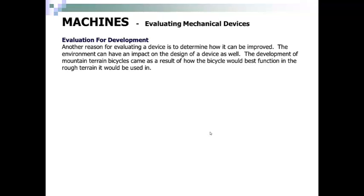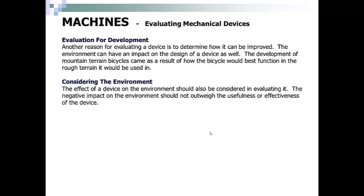Evaluation for development: another reason for evaluating a device is to determine how it can be improved. The environment can have an impact on the design of a device as well. The development of a mountain terrain bicycle came as a result of how the bicycle would best function in the rough terrain it would be used in. The effect of a device on the environment should also be considered in evaluating it — the negative impact on the environment should not outweigh the usefulness or effectiveness of the device.